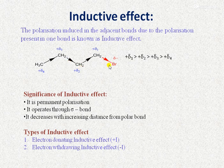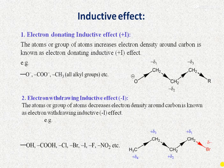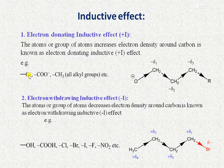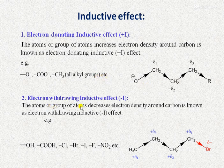The inductive effect is a permanent effect that operates through sigma bonds and decreases with increasing distance from the polar bond. There are two types: the electron-donating inductive effect (+I effect) and the electron-withdrawing inductive effect (-I effect). Atoms or groups that increase electron density around carbon — such as negatively charged oxygen (O⁻), carboxylate ions, methyl, or alkyl groups — show the +I effect.